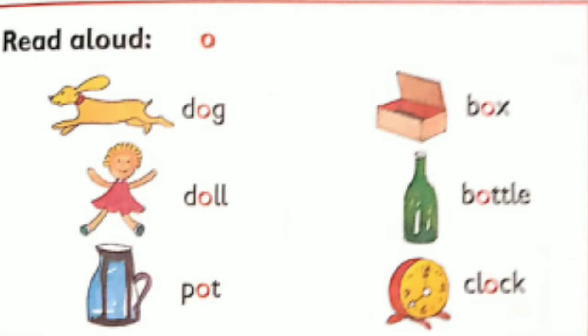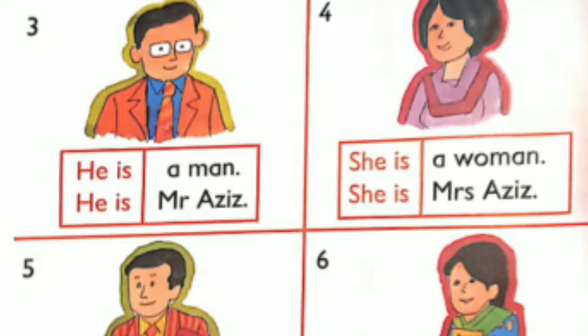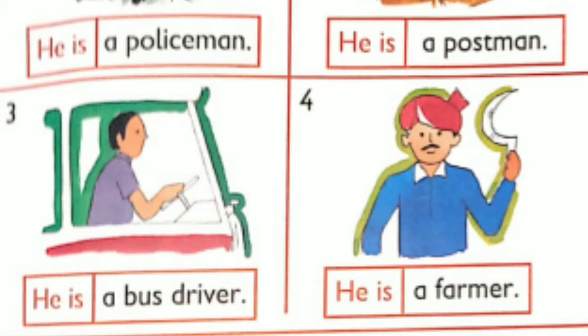Item 3 — He is / She is. He's a boy. He's Jamil. She's a girl. She's Sarah Khan. He's a man. He's Mr. Aziz. She's a woman. She's Mrs. Aziz. He's Mr. Riaz. He's a teacher. She's Miss Ross. She's a teacher. He's a postman. He's a policeman. He's a bus driver. He's a farmer.